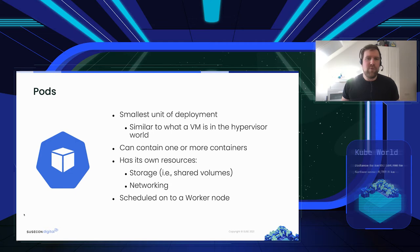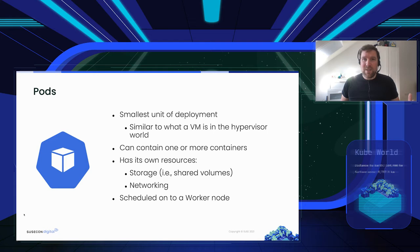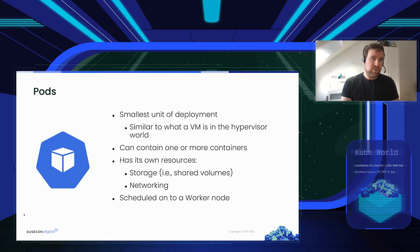A Pod is the smallest unit of deployment in Kubernetes — conceptually similar to a virtual machine in a hypervisor world. Each Pod can contain one or more containers and is encapsulated from the rest, with its own storage volumes and networking. All containers within one Pod are always scheduled by Kubernetes on the same worker node and communicate with each other over localhost. Every container still has its own file system and image.